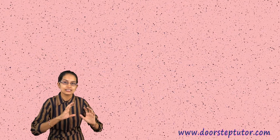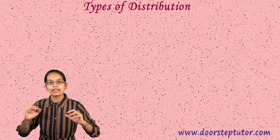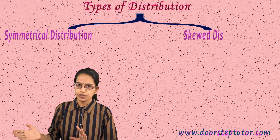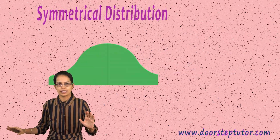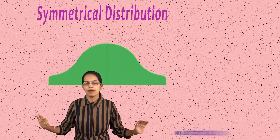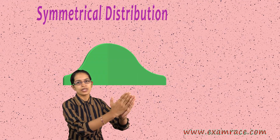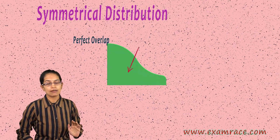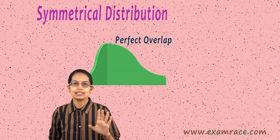Once we understand this, the next important thing is the types of distribution. The distribution can be symmetrical or skewed. When I say symmetrical distribution, it is as per a normal probability curve. The best way to understand a normal probability curve is to consider it as a figure drawn on paper — when I fold it, it perfectly overlaps. When it perfectly overlaps, this means it is a symmetrical distribution.